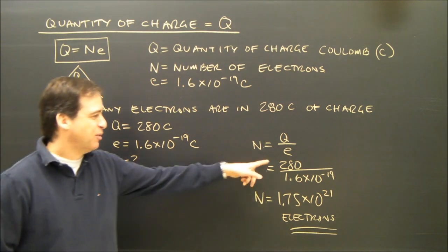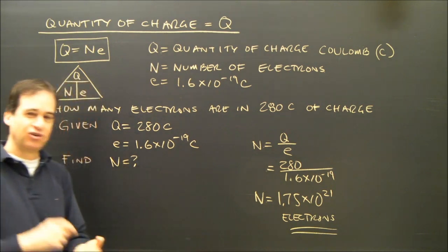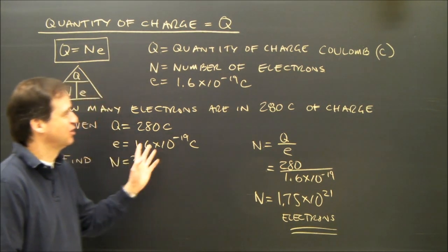So basically, a small amount of charge is made up of a very large number of electrons. So to do this question, you're going to have to know how to do scientific notation on your calculator. Okay? So let's move on to the next equation.